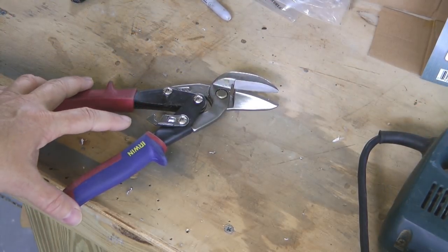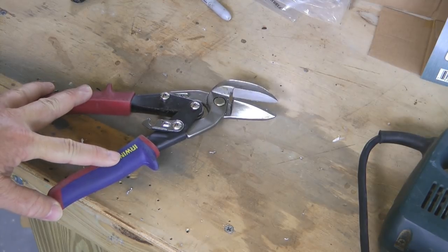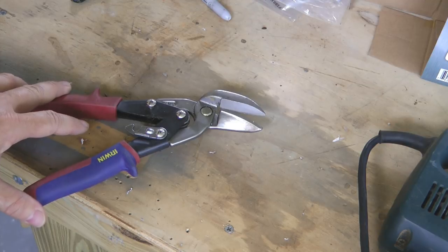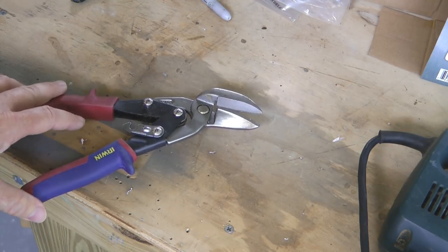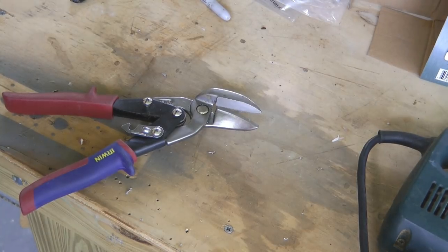Some builders use metal snips to cut fiberglass, as long as it's not too thick, and of course it does a real number on the blades in short order, but that is one non-power tool option for cutting fiberglass.